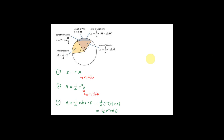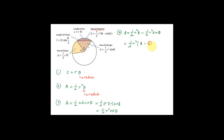Now I'm going to show you the fourth formula, that is called the area of segment. Remember, this is called a segment. Area of segment equals the area of the sector, which is half R square theta, minus the area of triangle, that is half R square sine theta. If you factorize it, you have half R square open bracket theta minus sine theta.